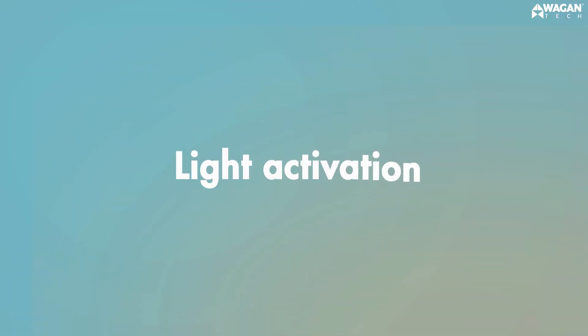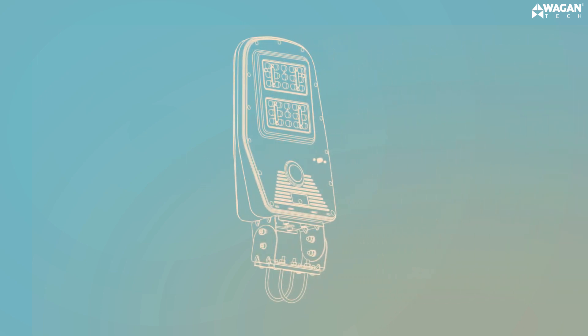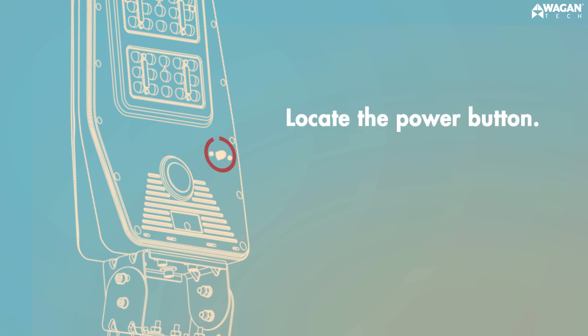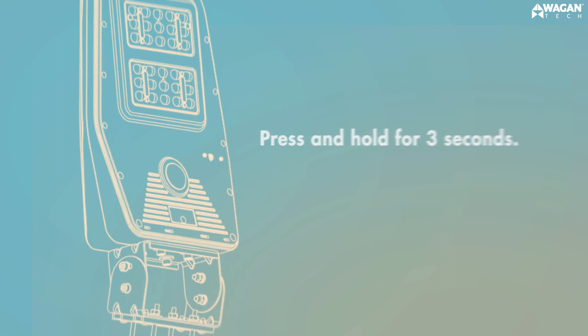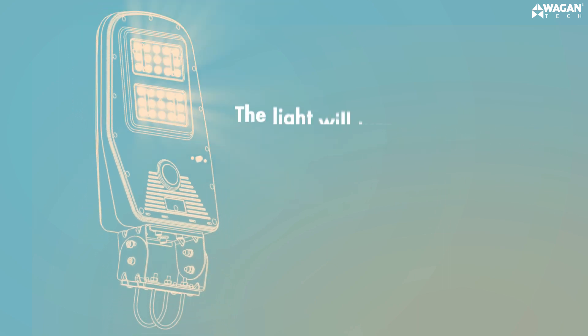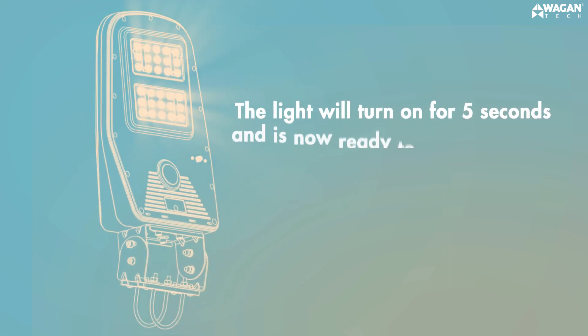First, let's take a look at how to activate the light. Locate the power button on the bottom of the light. On this solar LED floodlight 1000, the power button can be seen here. Press and hold the button for three seconds to activate the light. The light will turn on for five seconds and is now ready to use.